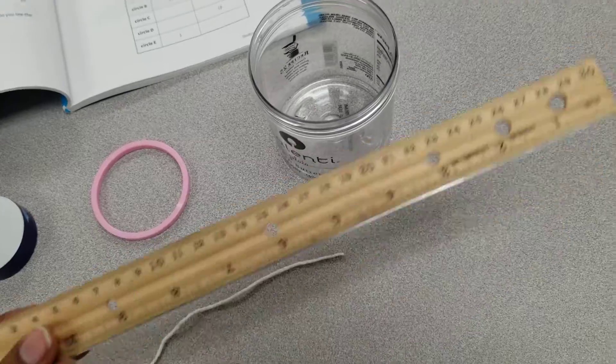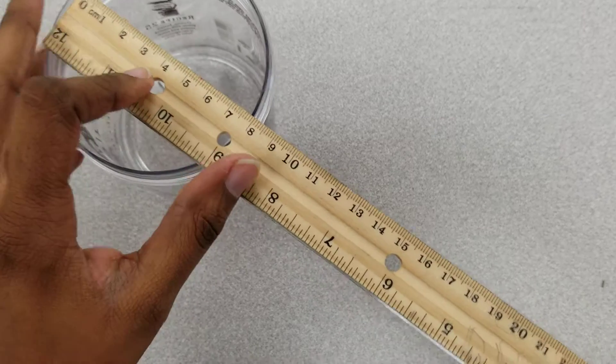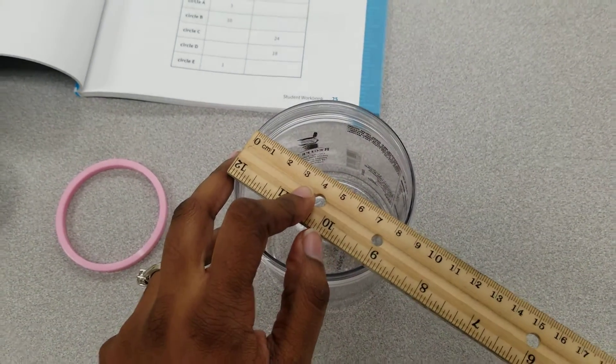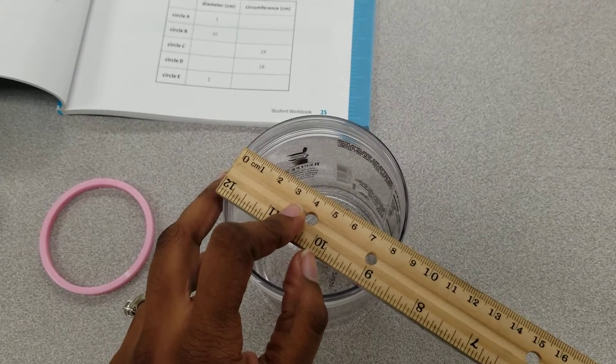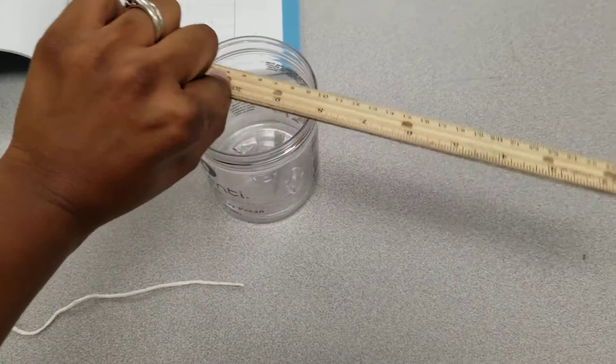Once I've done that, I'll also take my ruler and measure the diameter of my object. Even though this is a cylinder, it has a circular base, so I can use this also to measure as a circle.